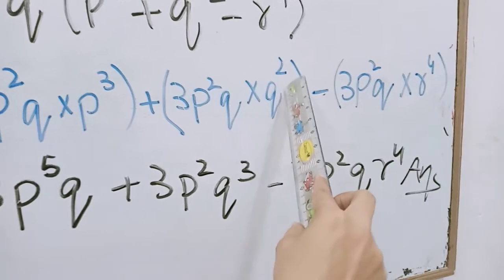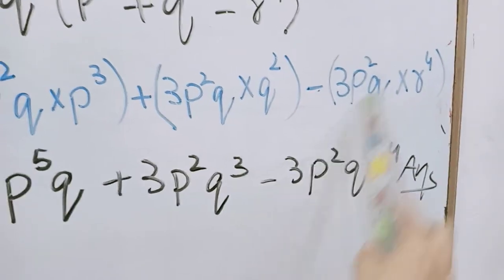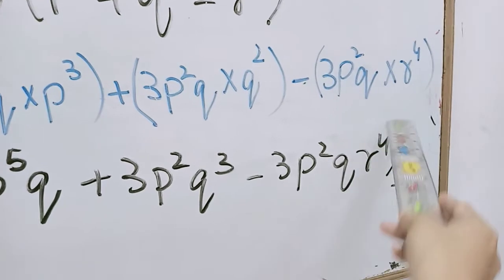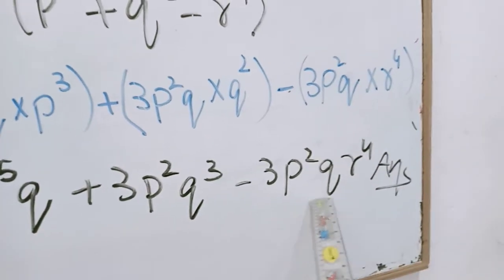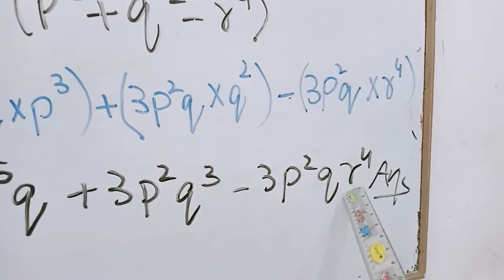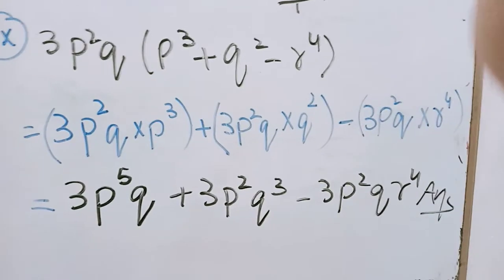Minus sign as it. 3. How many p we have: p square only. Q, no more q as it. R raise power 4. We have other r? No. So we write here r raise power 4 as it. So this is complete question.